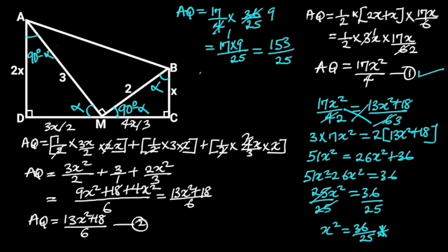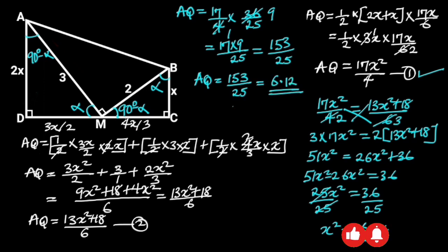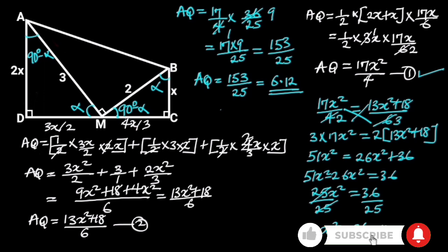Substituting X squared equals 36 over 25 into Equation 1: area equals 17 over 4 times 36 over 25. Since 36 divided by 4 is 9, this gives 17 times 9 over 25, which equals 153 over 25, or 6.12 square units. Thanks for watching — if you like this video, make sure to subscribe for more.